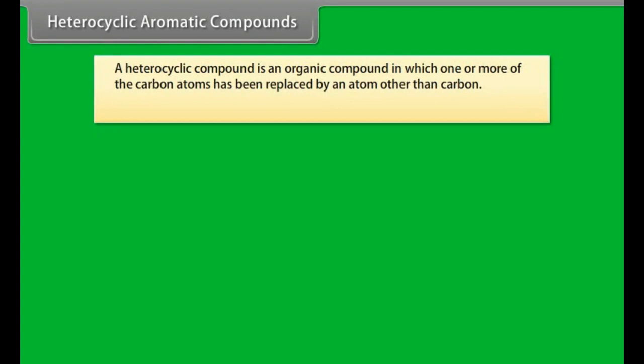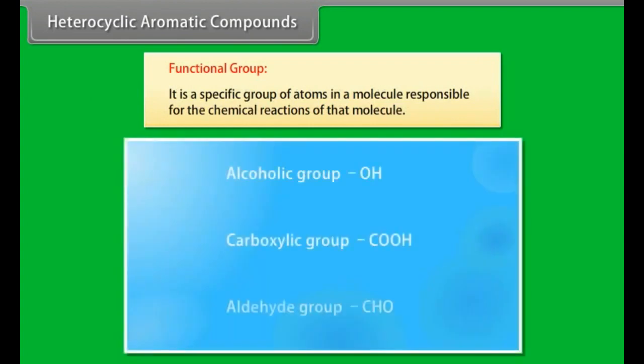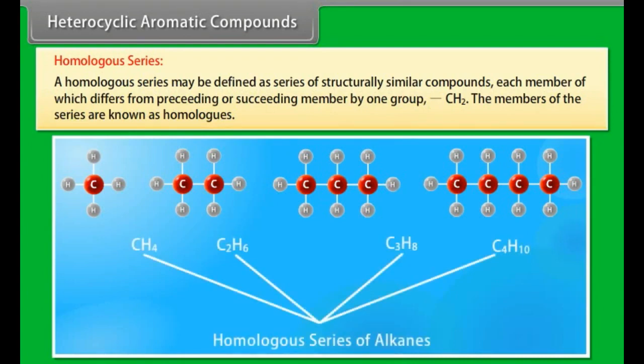Heterocyclic aromatic compounds: a heterocyclic compound is an organic compound in which one or more of the carbon atoms have been replaced by an atom other than carbon. Typical heteroatoms are nitrogen, oxygen and sulfur. Functional group: it is a specific group of atoms in a molecule responsible for the chemical reactions of that molecule. Homologous series: a series of structurally similar compounds where each member differs from the preceding or succeeding member by one CH2 group. The members of the series are known as homologs.